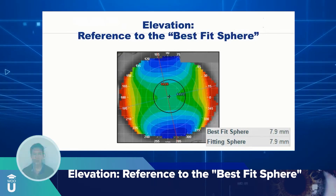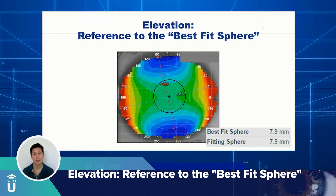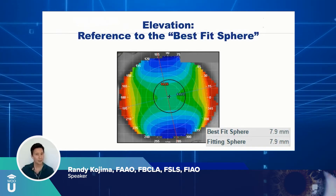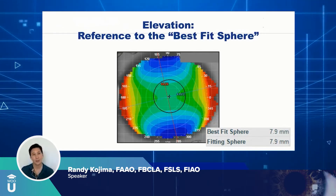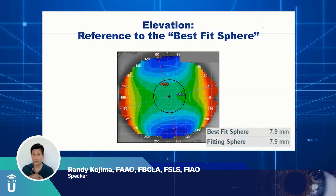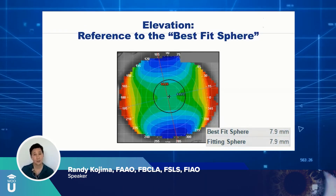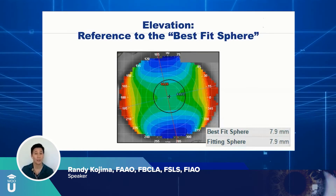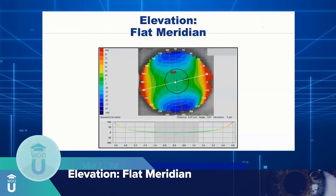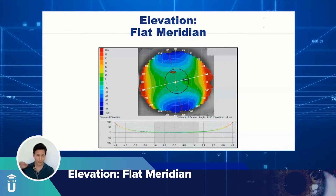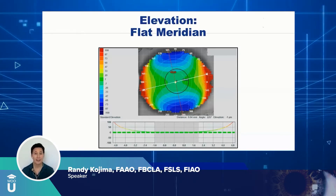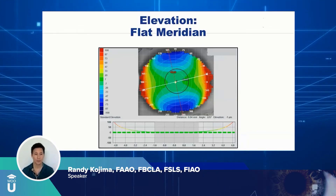To understand where those colors come from on the elevation map, it uses what's called a best fit sphere — the closest radius that will generally match the non-spherical nature of the eye. There's really no cornea you've ever seen in practice that's truly spherical. It might have a spherical K reading, but it's always slightly asymmetric in some way. The best fit sphere is the closest we can come up with. If we take the flat meridian and draw a dotted green line across the graph, that is the sphere — the perfect spherical surface.